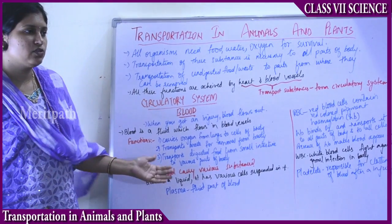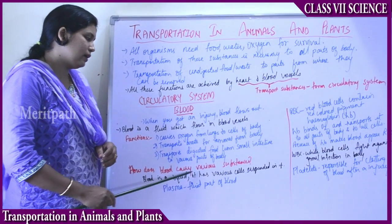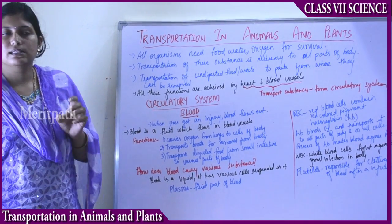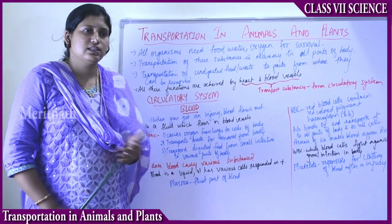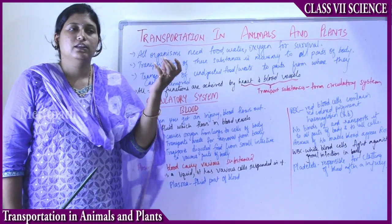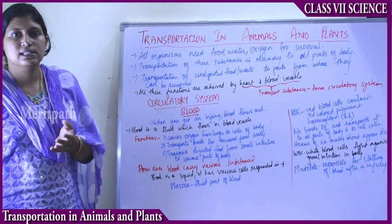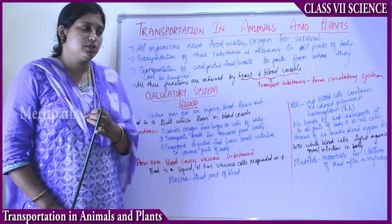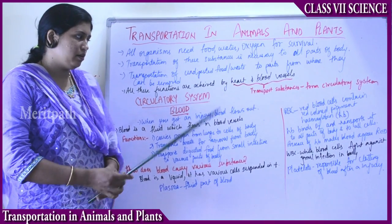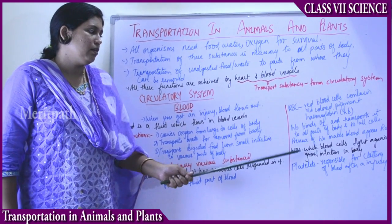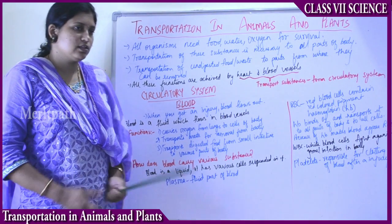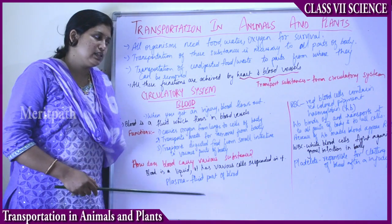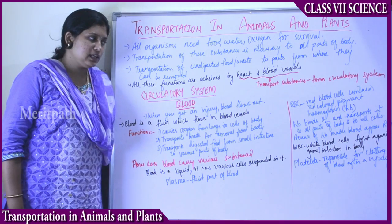How does this transportation actually take place? How does blood carry these various substances from part to part of the body? Blood is a liquid and has various substances suspended in it — various kinds of cells and substances. The components present in the blood are plasma, red blood cells (RBCs), white blood cells (WBCs), and platelets. All these things together make up blood and help in transportation.